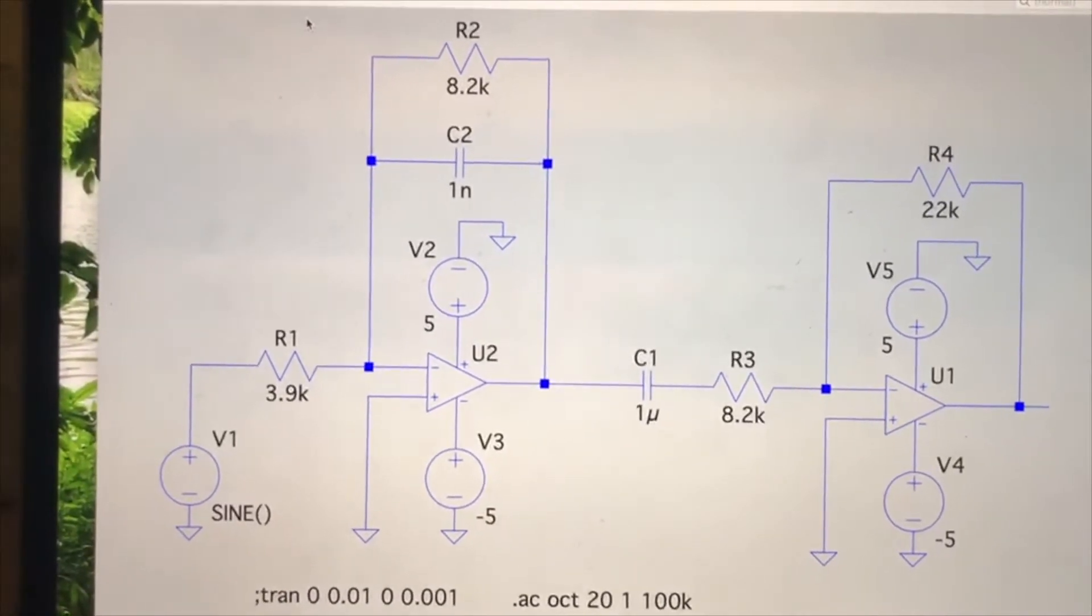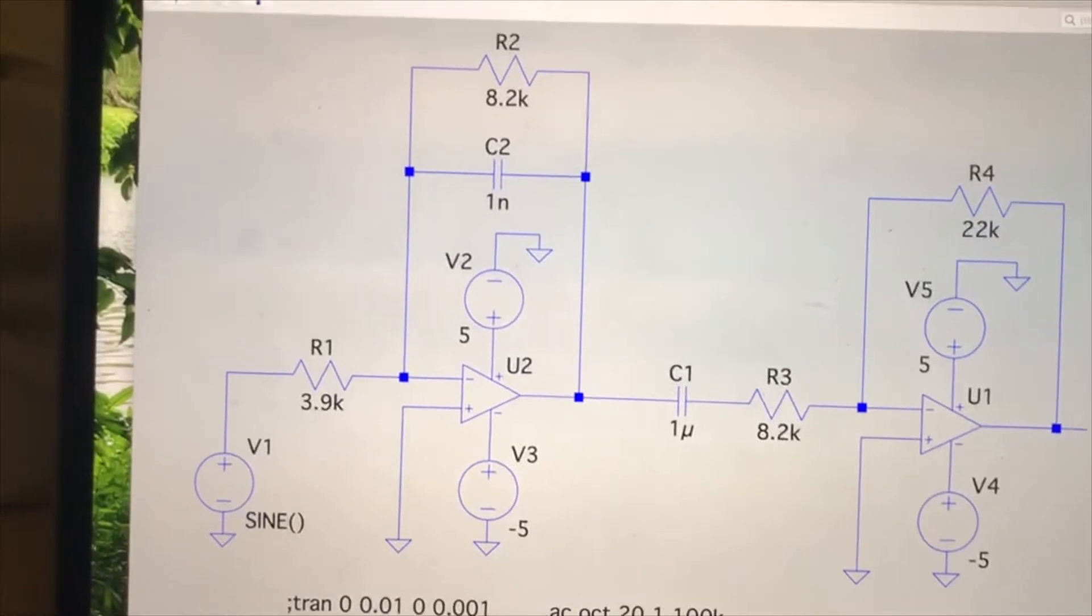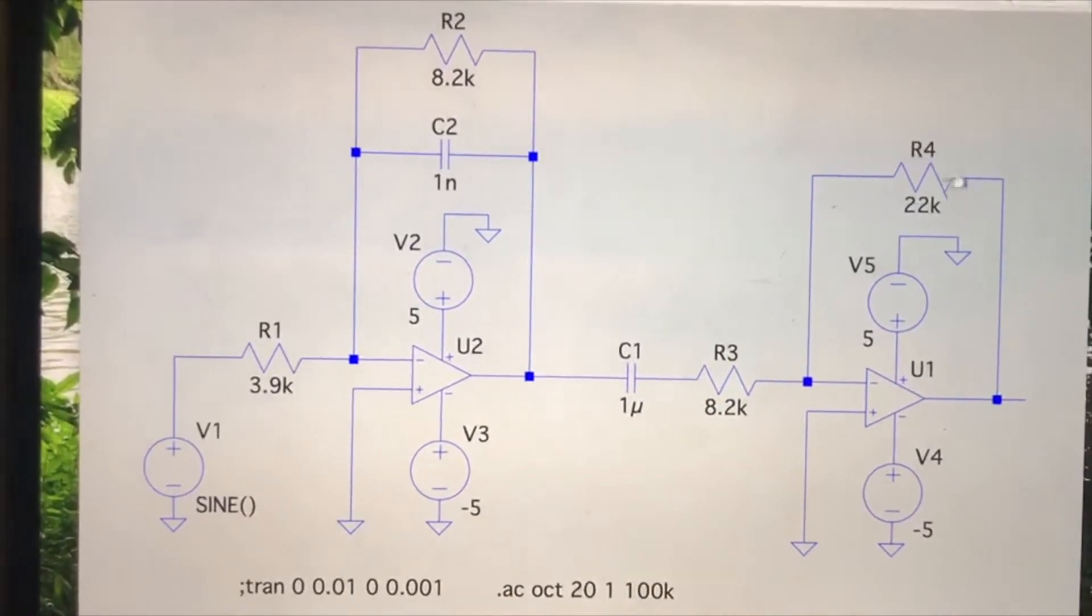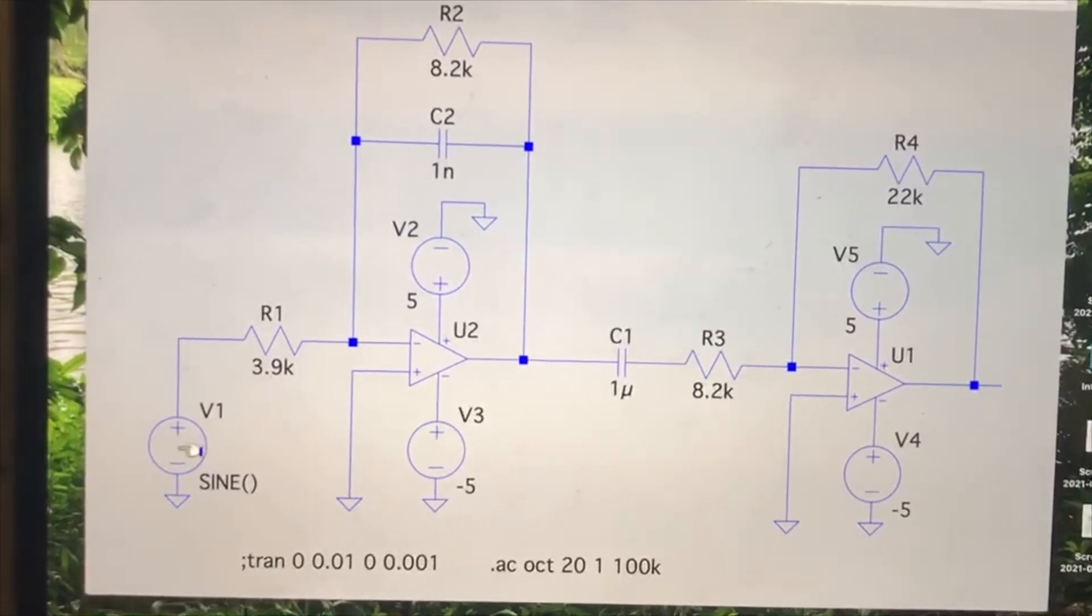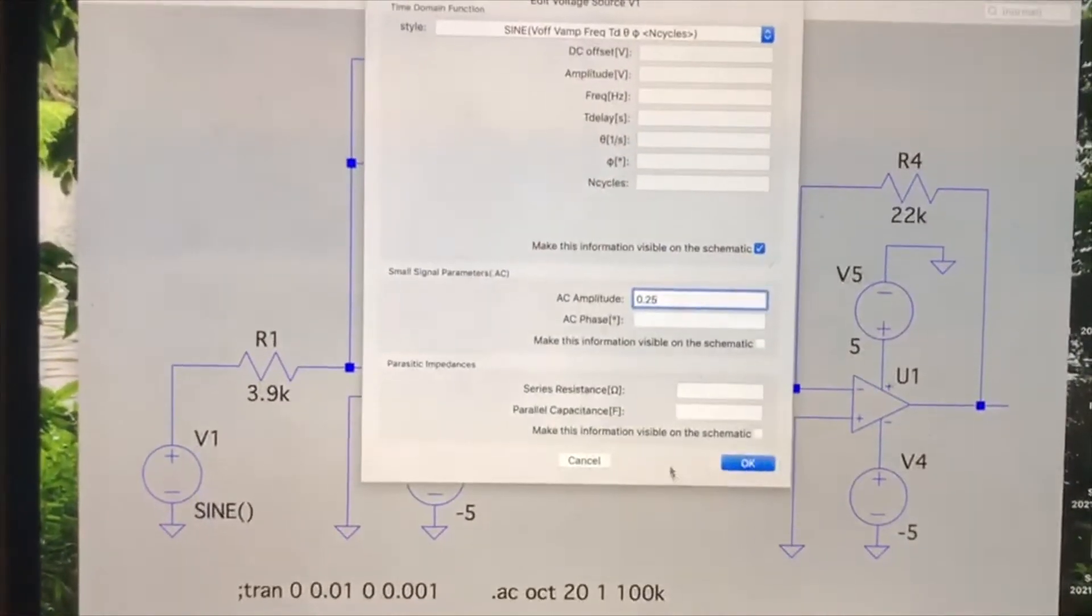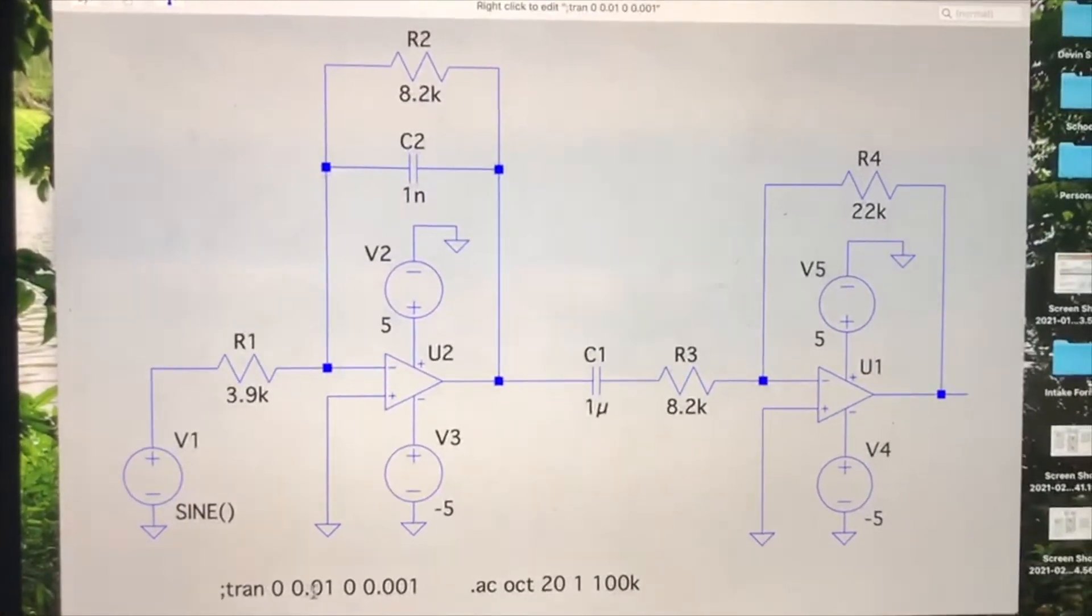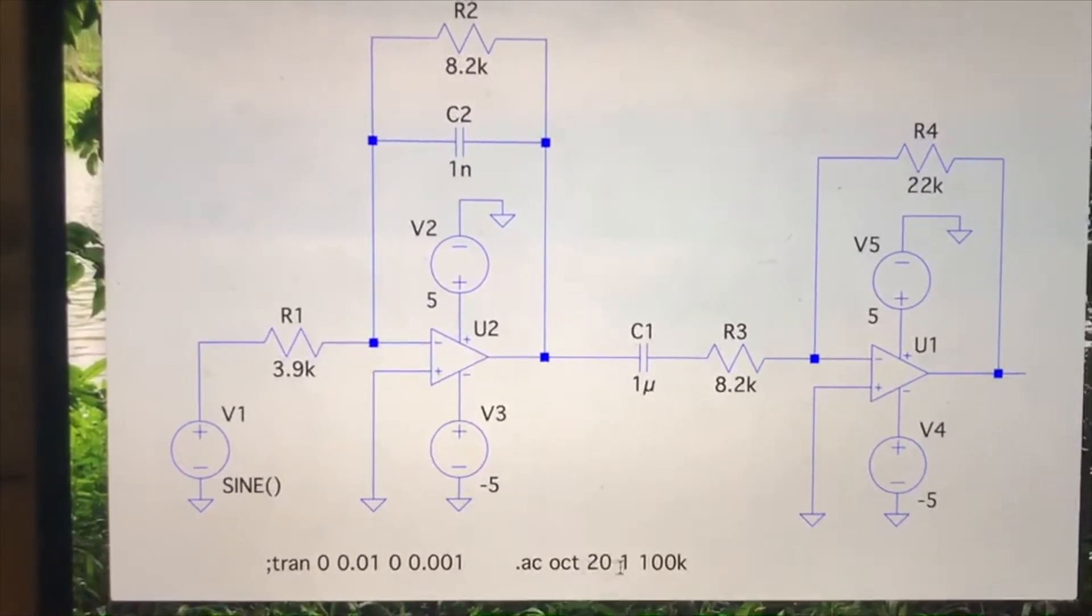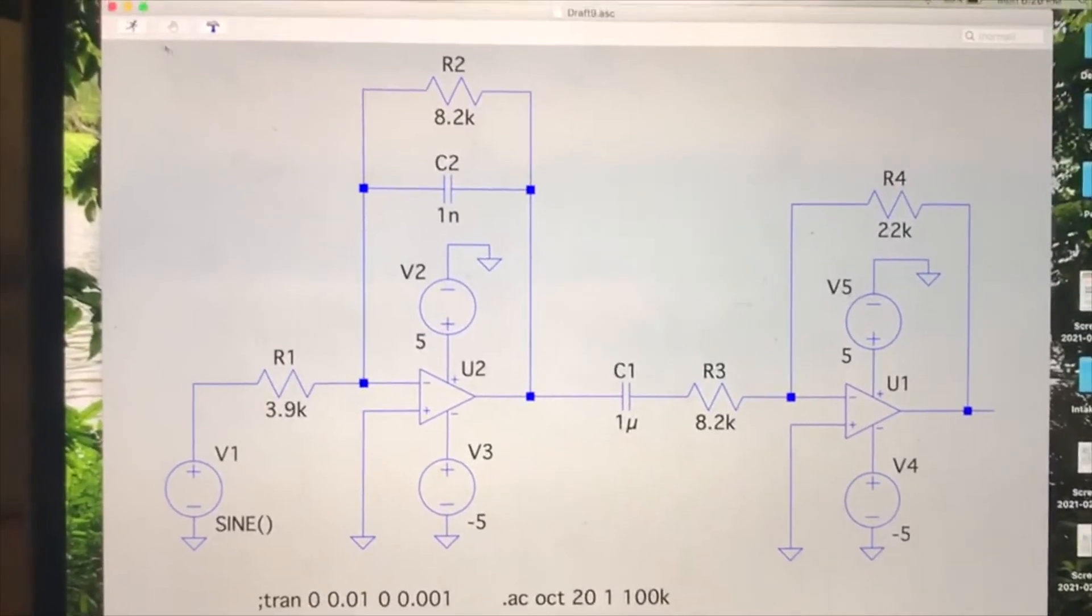This is my LTSpice simulation of the active bandpass filter. Over here is the lowpass filter, and everything on the right side over here is the highpass filter. We have an input here that's a 2.5 AC amplitude, and we're going to run that as an AC sweep starting from 1 hertz to 100 kilohertz with 20 points as expected in the lab.